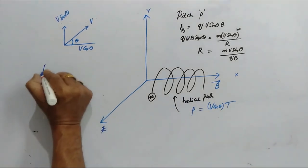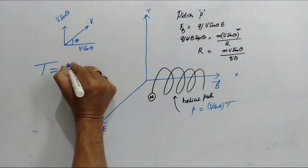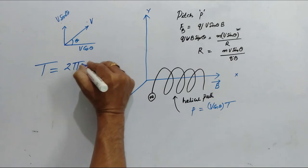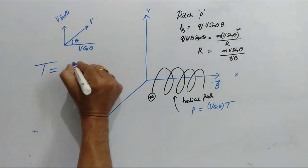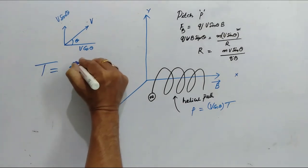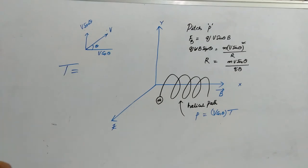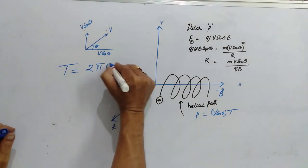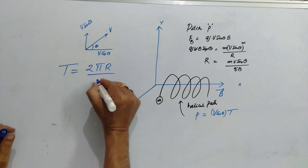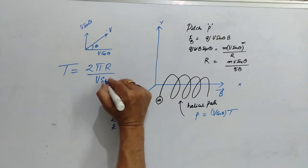How much T? T is equal to 2 pi r by V sin theta.